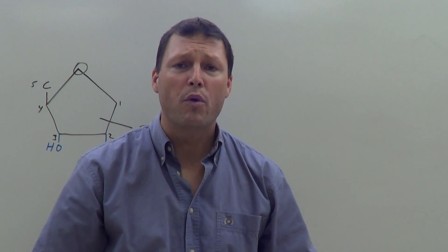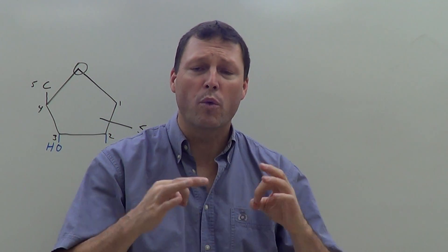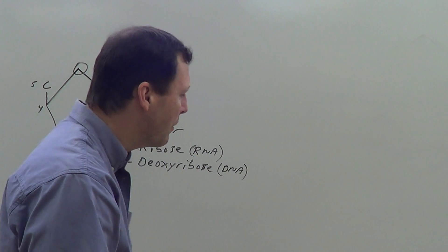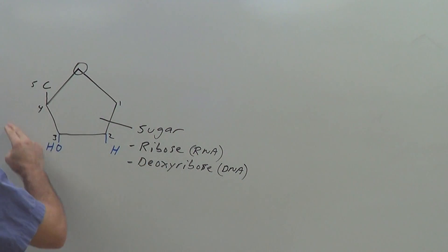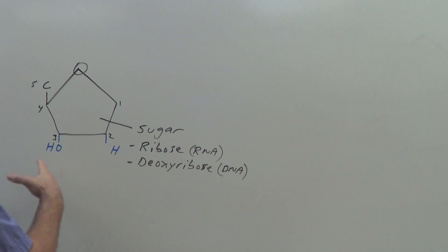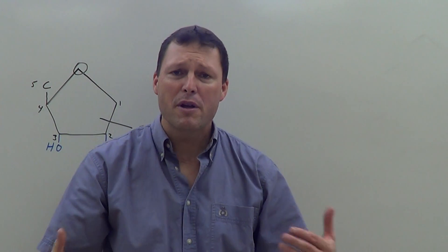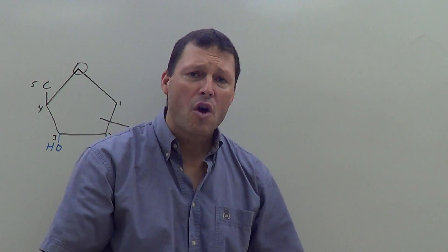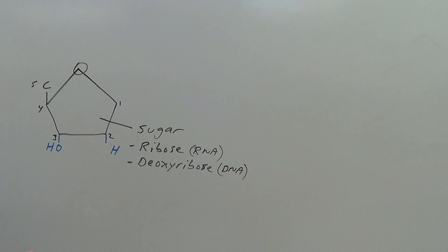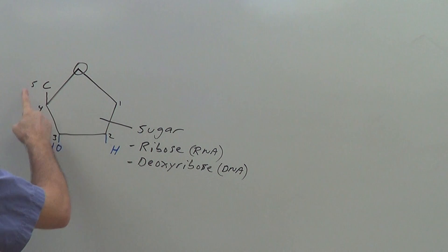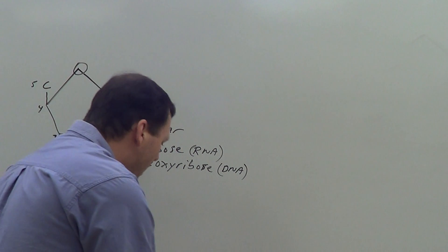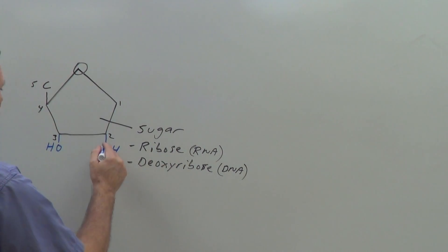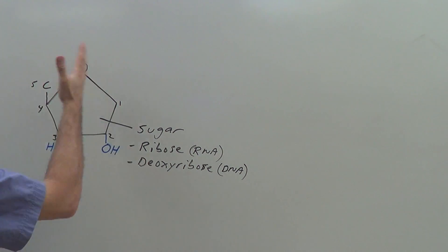DNA has to be around for a lifetime, so we want really stable DNA. One of the ways we get that stability is by making it out of a very stable sugar. Oxygen is a somewhat reactive element, so if we remove the oxygen, the molecule becomes more stable — that's deoxyribose. If we add the oxygen back, it becomes less stable — that's ribose again.